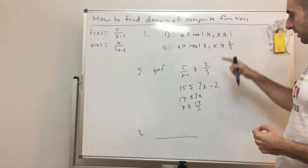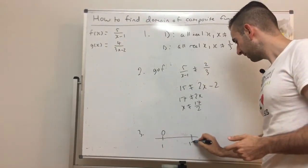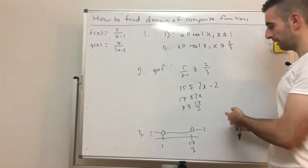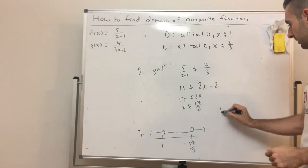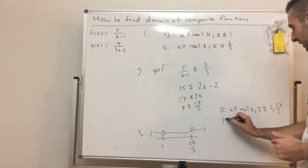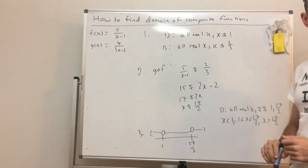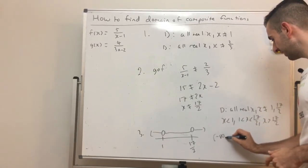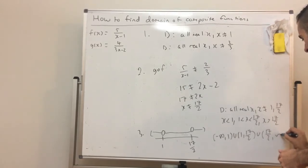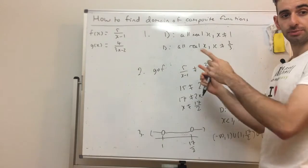Step three for g∘f: the domain is the intersection of x ≠ 1 (from the domain of f) and x ≠ 17/2. On a number line, 1 has an open circle and 17/2 (which is 8.5) has an open circle further along. In words: all real x where x ≠ 1, 17/2. In inequality form: x < 1 or 1 < x < 17/2 or x > 17/2. In interval notation: (−∞, 1) ∪ (1, 17/2) ∪ (17/2, ∞).